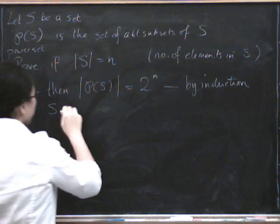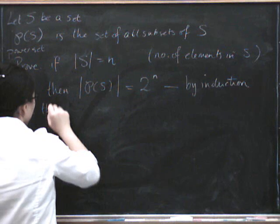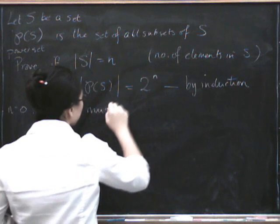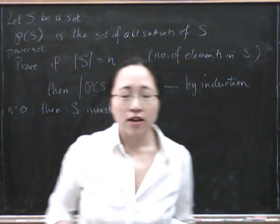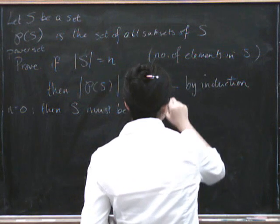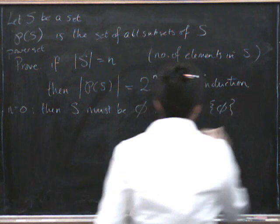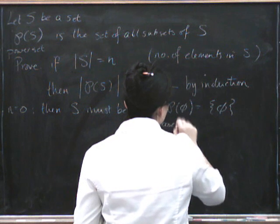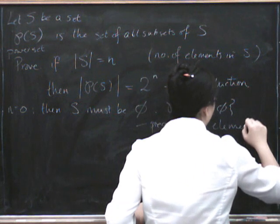So S must be, then, S, if it's got n elements, must be the empty set. How many subsets are there of the empty set? Well, there's just the empty set. So the power set of the empty set has only one element. Precisely one element.